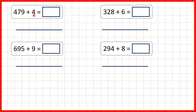We need to add a single digit number to a three digit number, and we're going to do this on a number line using bridging. That means we're going to add however many we need to get to the next multiple of ten — so to a number that ends in a zero — then we're going to add the rest.